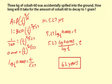So that's how long it would take for that 3-kilogram spill of cobalt-60 to decay to 1 gram — approximately 62 years.